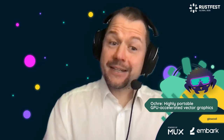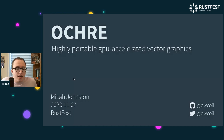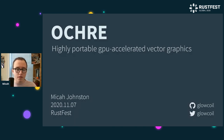Glowcoil shows how vectors can act to create a great UI — easy to do on a slow GPU, and they won't fall apart when stacked. Hi, I'm Micah Johnston. I also go by the username Glowcoil, and today I'm going to be presenting a project I've been working on called Ochre, which is a GPU-accelerated vector graphics and text renderer library for Rust.